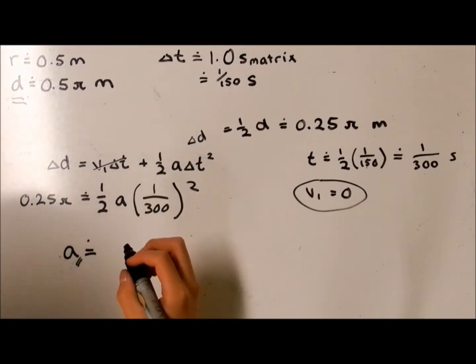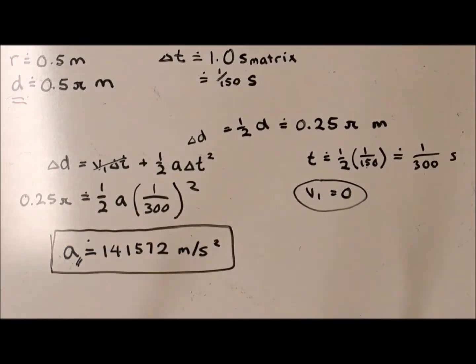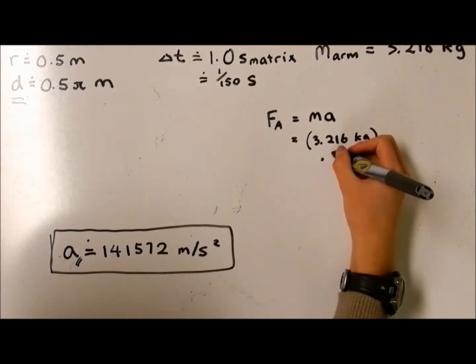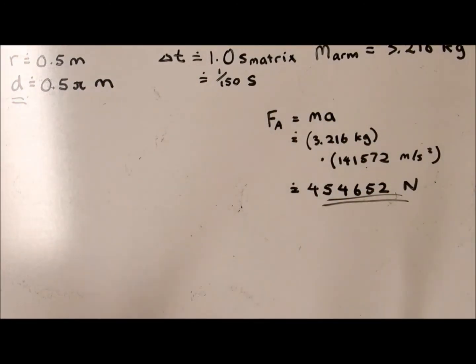The linear acceleration of the arm calculated from these values is thus 140,000 meters per second squared. The mass of the human arm is around 3 kilograms, so the force required to effect this acceleration is 450,000 Newtons.